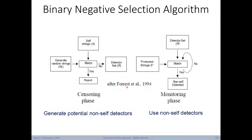Here's a simple schematic of the censoring phase, where the goal is to generate potential non-self detectors. We start by generating random strings — candidate detectors. We ask if any random strings match any self-strings with some affinity. If they do, we reject the candidate; if they don't, we include them in our detector set. Once we've trained a detector set, we turn the algorithm to its monitoring phase. We use the detector set to determine if new strings either match or don't match. If they match, we conclude the string belongs to non-self and we've detected an instance of non-self.